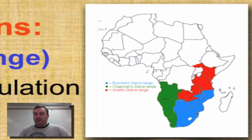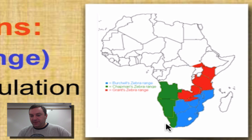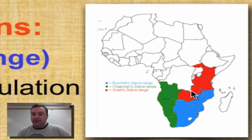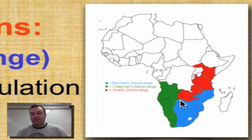Zoom in on this picture — there are three types of zebras found in Africa. One species has its range in the western part of Africa. Another species occupies the eastern and southeastern part. And then the grants zebra, probably one of the more common ones you'll see, gets the central eastern part of Africa. So these three different species of zebra each have their own distinct distribution or range.